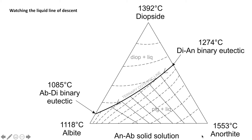In a ternary solid solution diagram we can depict plagioclase co-evolving with diopside. We have albite, anorthite, and diopside as our end members. We have two binary eutectic points — one between albite and diopside and one between anorthite and diopside — but no binary eutectic between the solid solution phases anorthite and albite. We also have isotherms and a solid black line which represents the variation in solid solution between anorthite and albite.